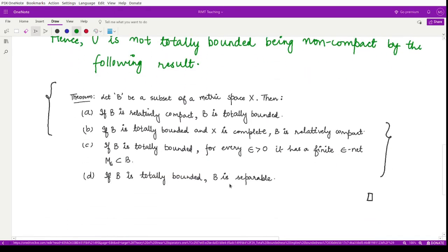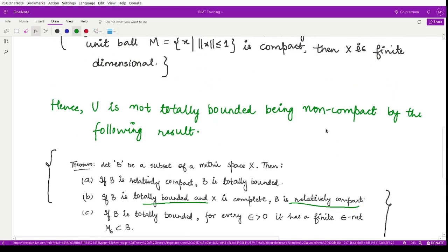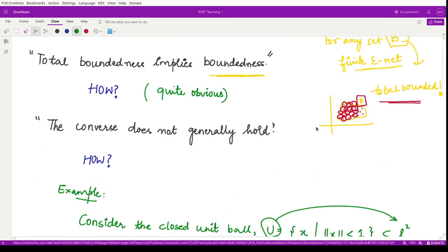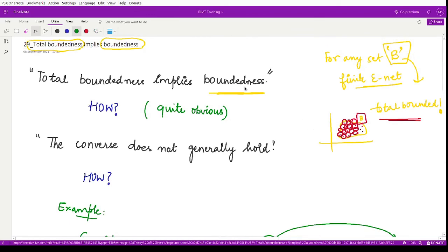And we have this result using this theorem which provides us the properties for total boundedness. So here we can use this result. I think you got this result. It says that every totally bounded set is bounded. However, the converse is not true. Well, that is it for this video. Thank you for watching.